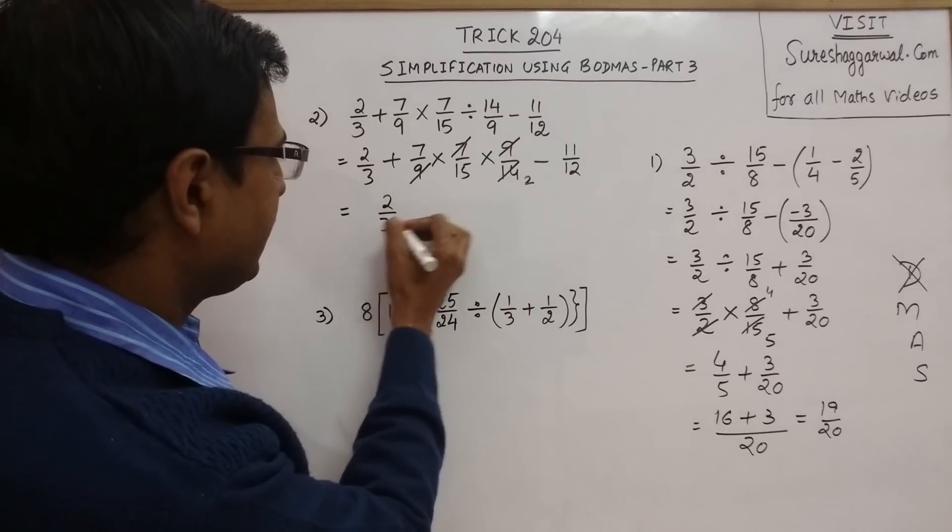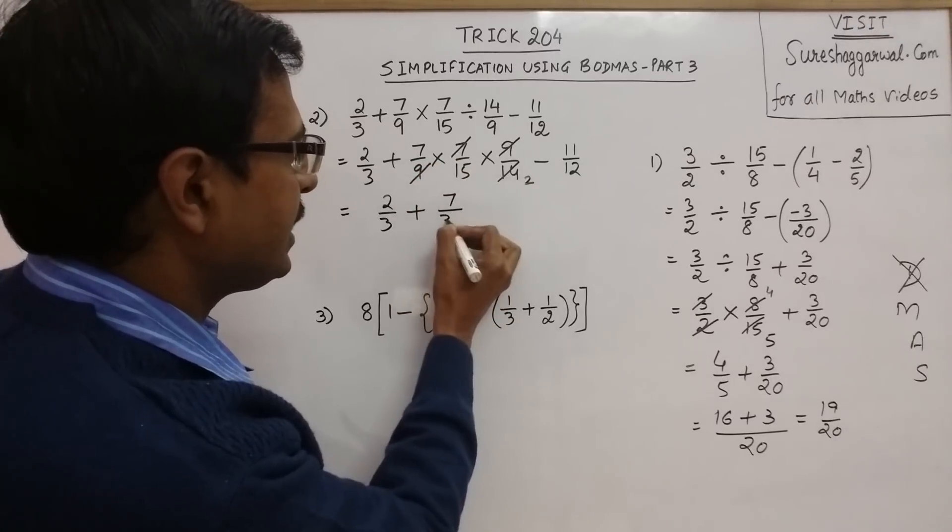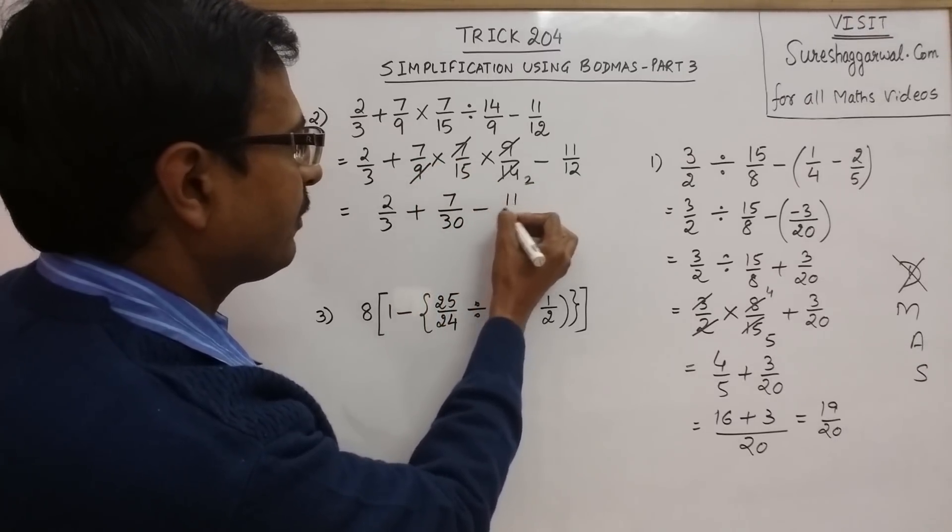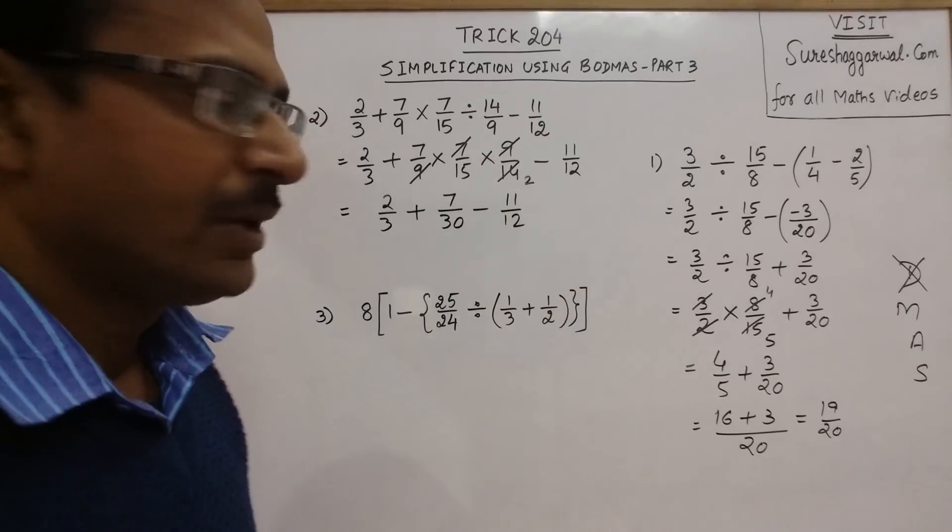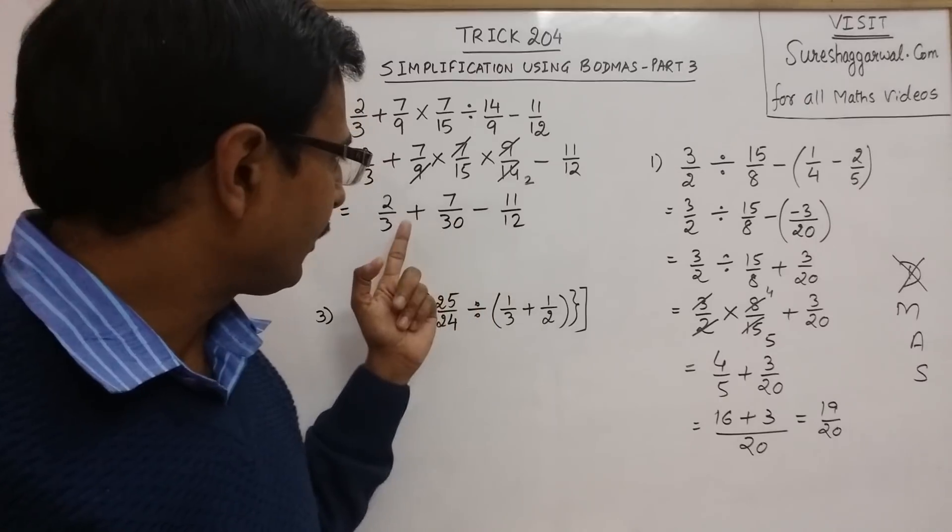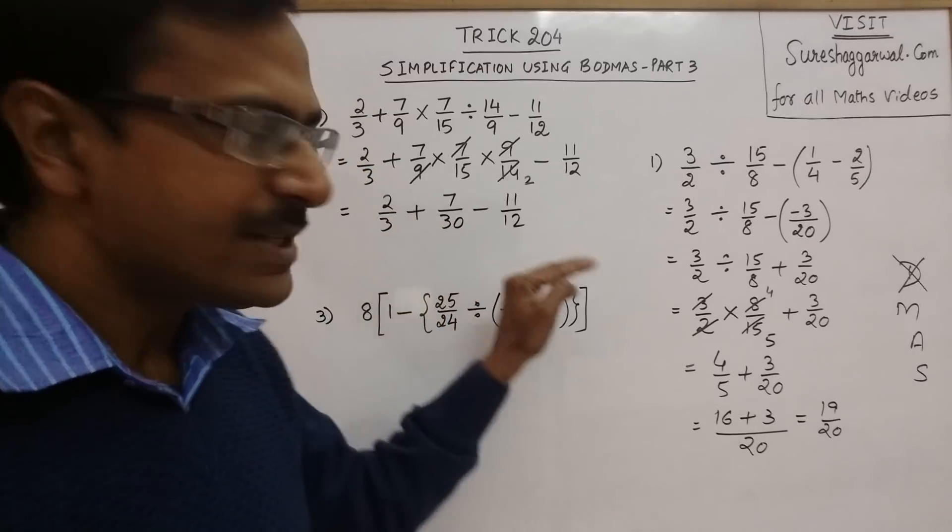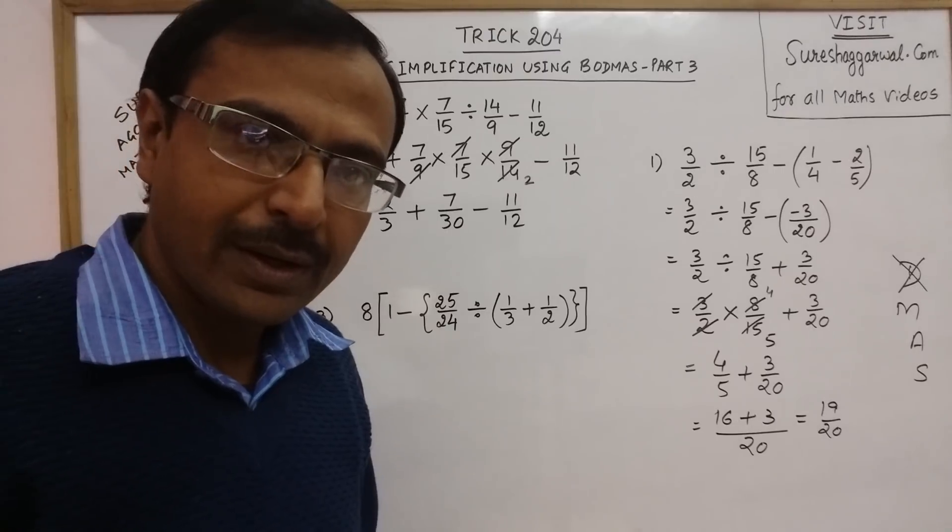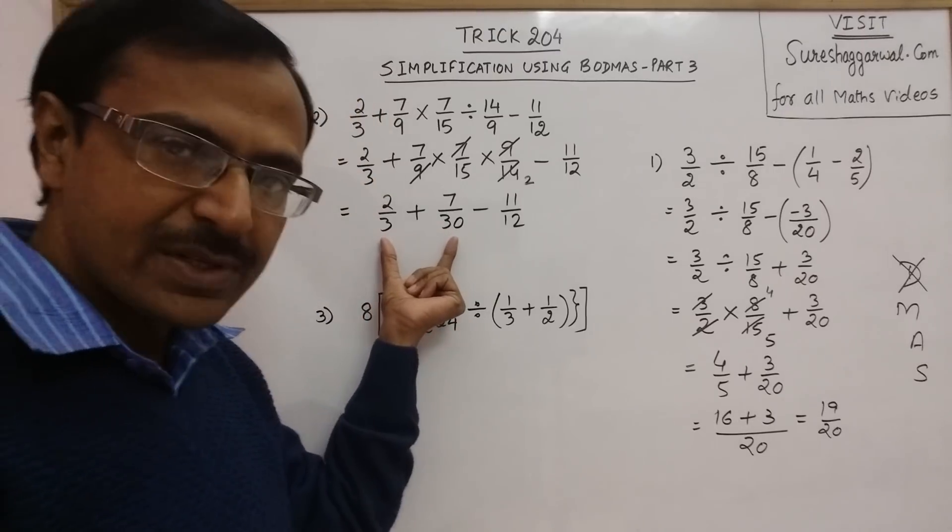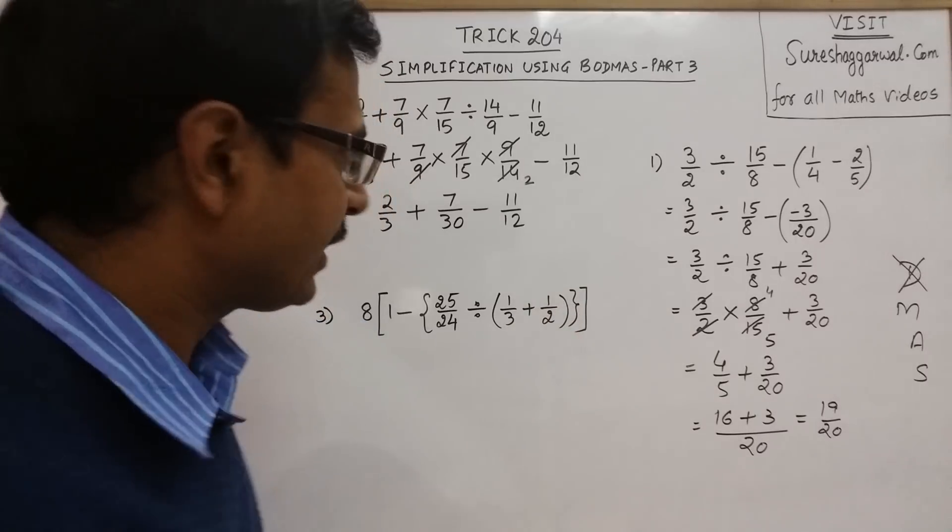This becomes 2/3 plus 7/30 minus 11/12. Now these are three fractions involving only plus and minus operation. You can solve all three directly or you can add these two first and then subtract the third one.